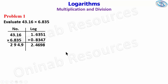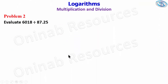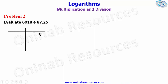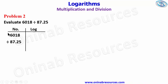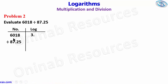That's the end of Problem 1. We go to Problem 2: evaluate 6018 divided by 87.25, presenting our work in a table with Number and Log columns. We have 6018 divided by 87.25. The integer part of the logarithm of 6018 is 3. We place our point and go to the logarithm table: 60 under 1, differences of 8, gives 7795.